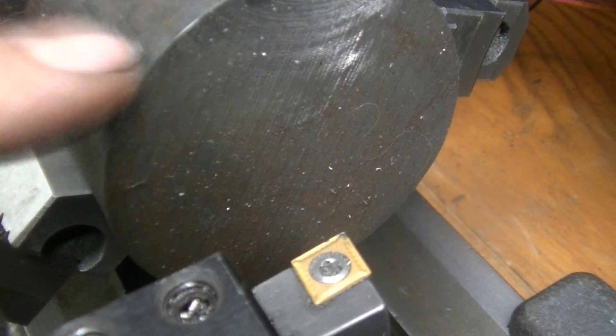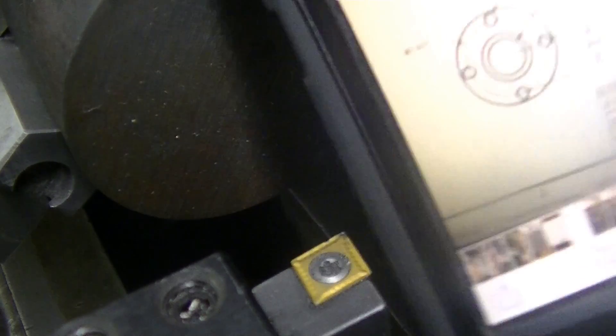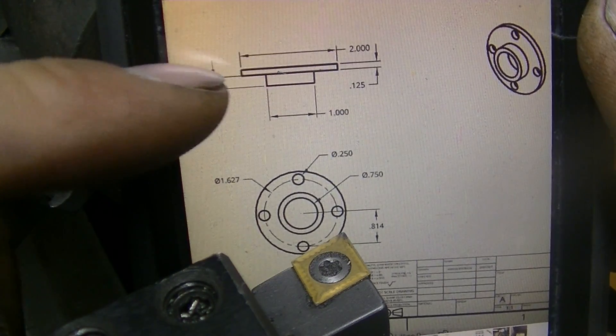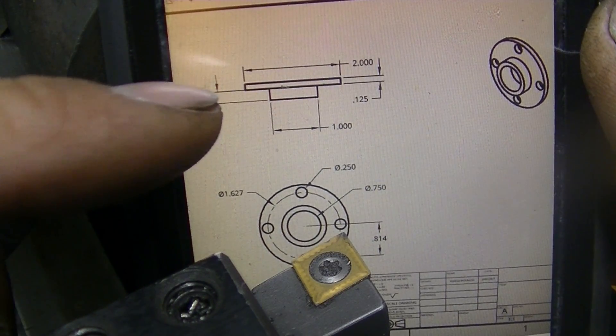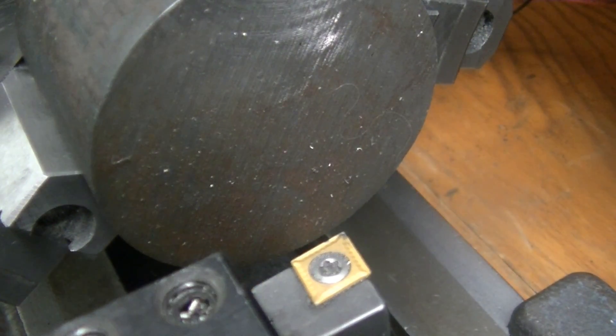We need to turn this OD down to two inches. Here's the drawing printed out on my phone. You're gonna turn, see it's gonna look like that as a profile view. We're gonna turn this down to two inches first. Let's face it off.